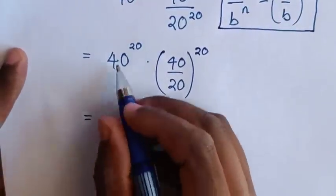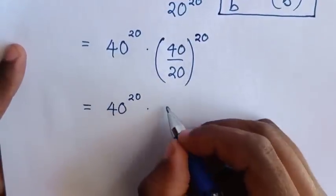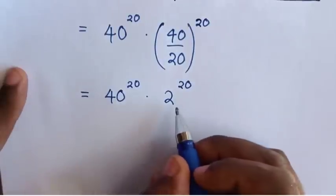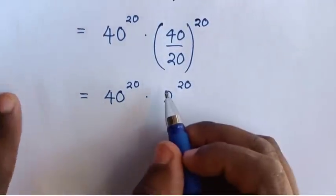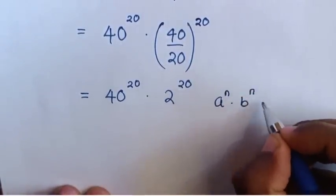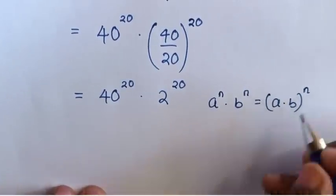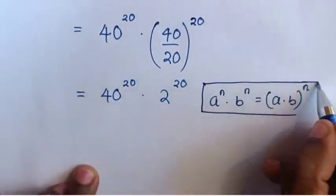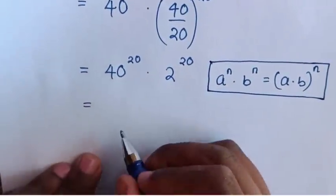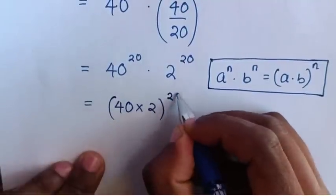This is equal to 40 power 20 times 40 over 20 is 2, power of 20. In this multiplication of exponents with different base but same power, we will apply this rule: a power n times b power n is equal to a times b, bracket, power n. So in here it will be equal to 40 times 2, bracket, power of 20.